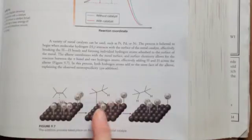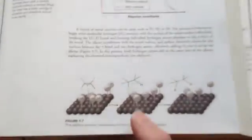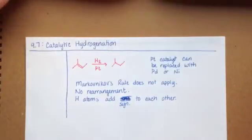The alkene doesn't flip itself around, turn itself upside down. The hydrogen atoms don't break free from the metal surface until they've attached themselves to the carbon atoms of the alkene. So every time they go on, they will add syn.